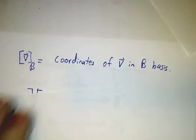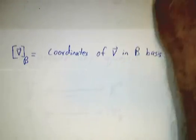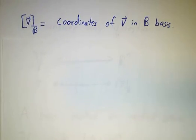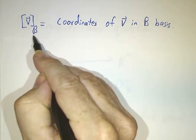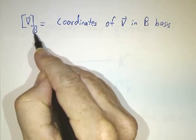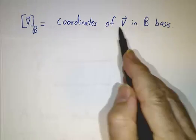Our notation is that if I have a vector and I put brackets around it with a subscript, where the subscript is the name of the basis, then that means the coordinates of v in the β basis.